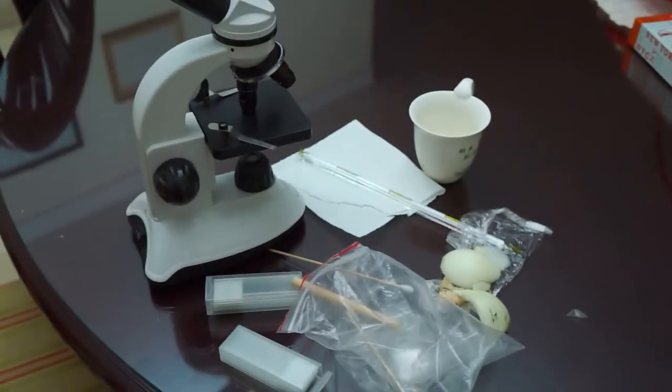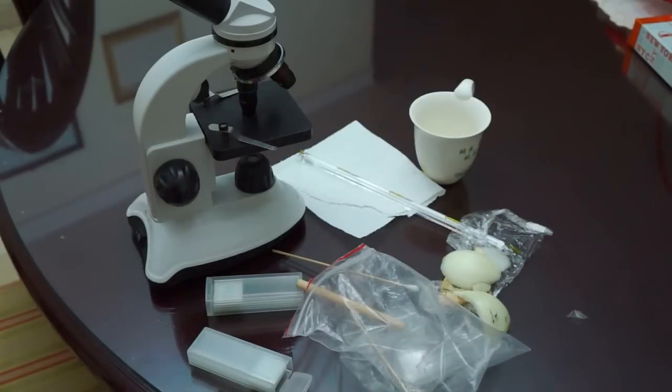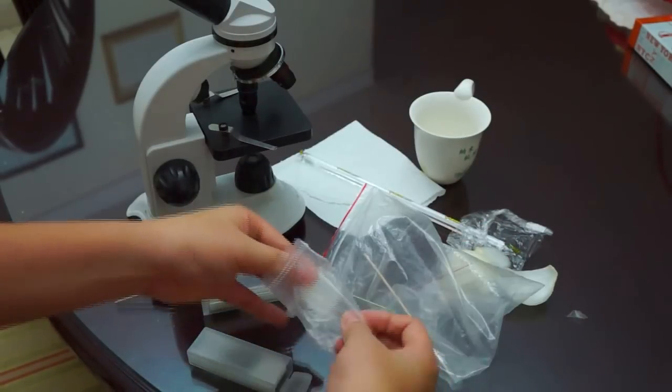Now we are going to prepare a slide. We are going to use our slide, cover slip, put what we just took out from the onion epidermis and add some water, prepare it and put it in the microscope. I am going to take my glove out now. I have my glove just not to have stinky hands. So we take our slide and prepare it.